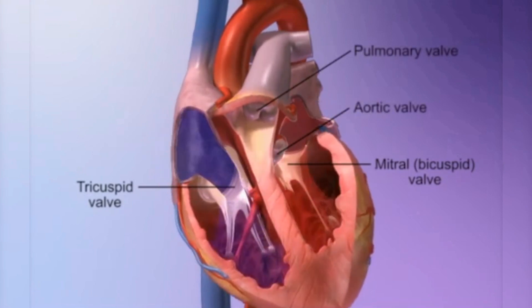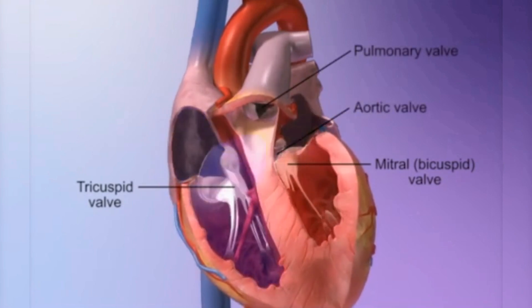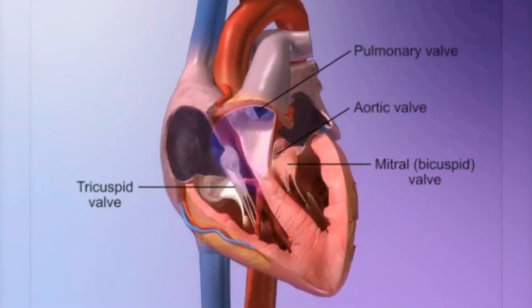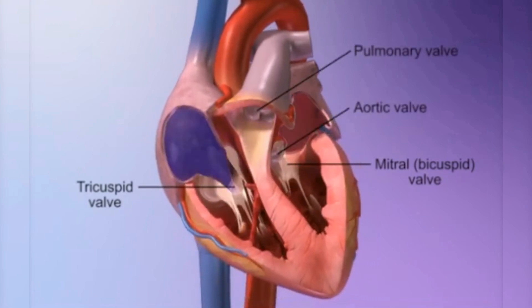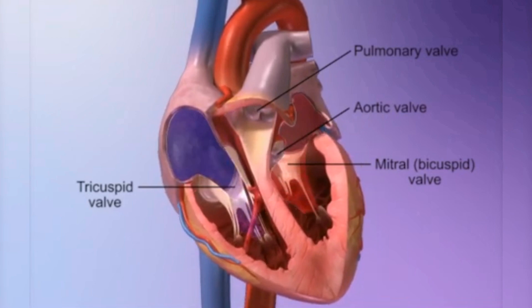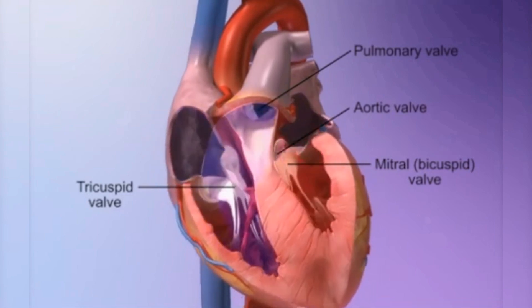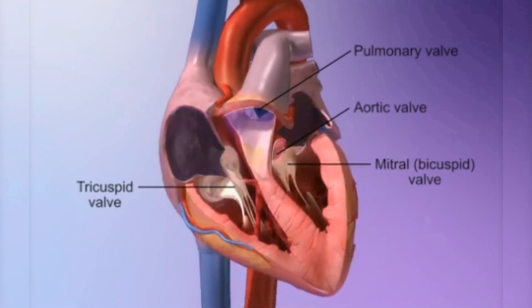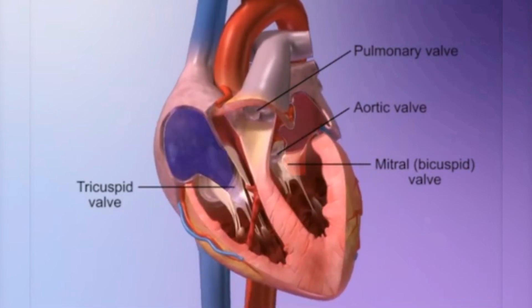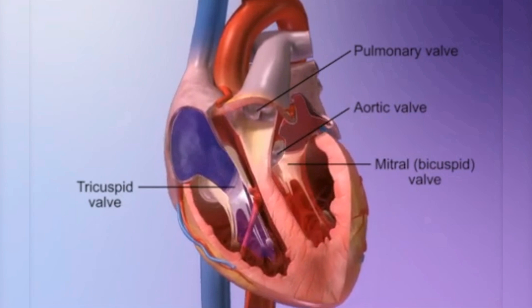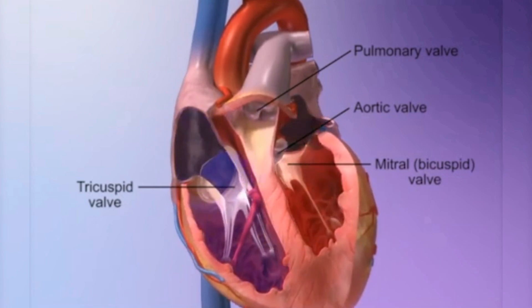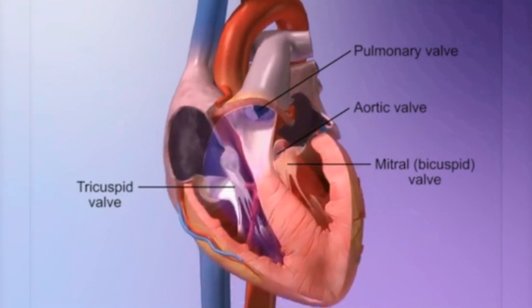The aortic valve is situated between the left ventricle and the aorta. These valves ensure one-way blood flow, preventing backflow, while the pulmonary valve is between the right ventricle and the pulmonary artery.